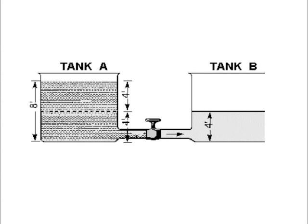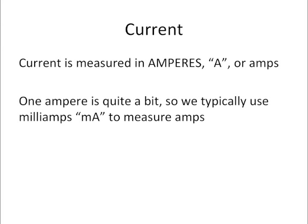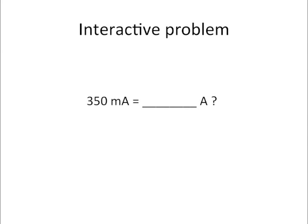So looking back at our analogy here. We've defined voltage as that difference in potential between Tank A and Tank B. So now what's the rate that that voltage, or that that difference there equalizes, or what's the rate at which the liquid flows from Tank A to Tank B? We know that as current and current is measured in amperes. We also call it amps. One ampere is quite a bit. So typically we use milliamps to measure amps. So another interactive problem here, we have 350 milliamps. How many amps is that? We can do basically the reverse of what we did before with the kilovolts to volts. We're going to move that decimal place over three positions to the left and that'll give us 0.35 amps.